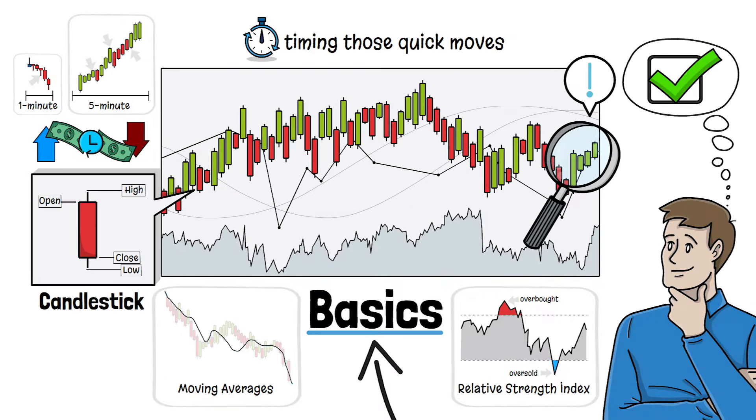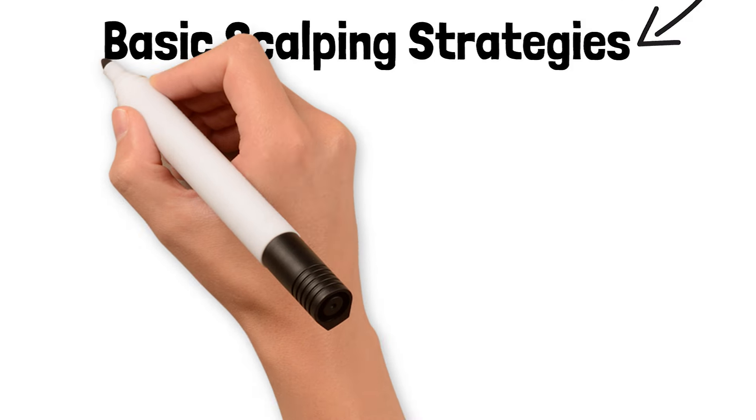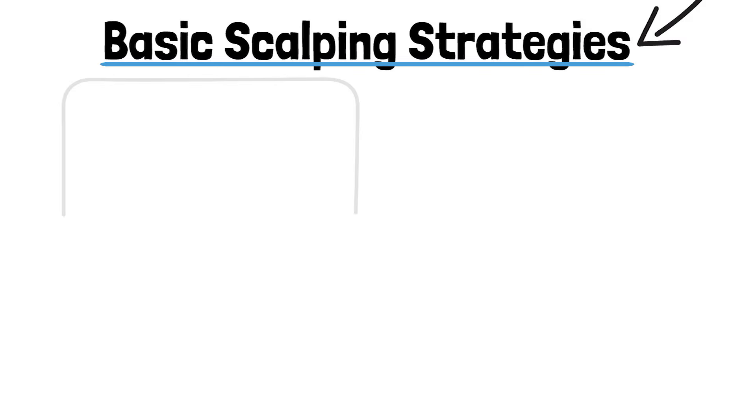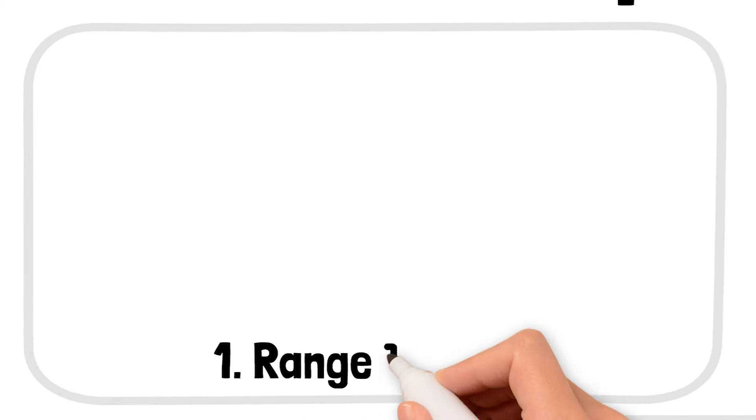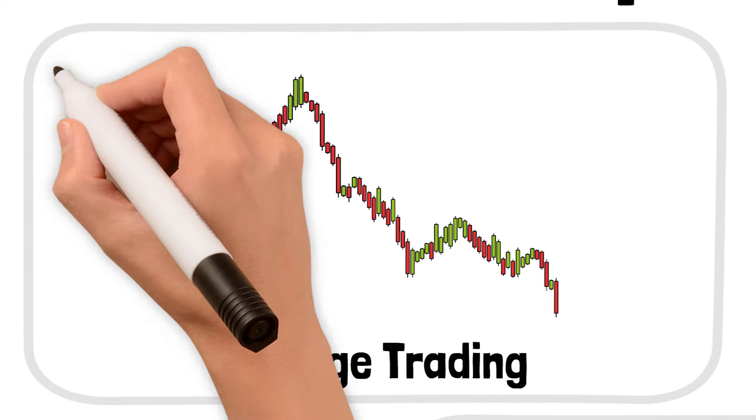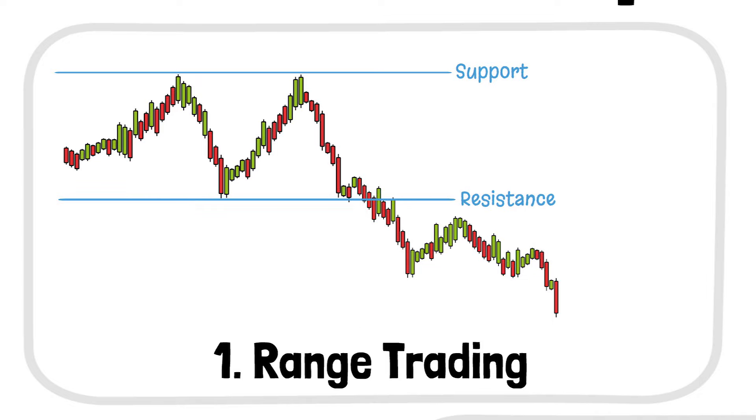Now that you've got the chart basics, let's dive into the basic scalping strategies that you can start using right away. One of the simplest and most effective scalping strategies is range trading. You're looking for an asset to move between two price levels: support and resistance.